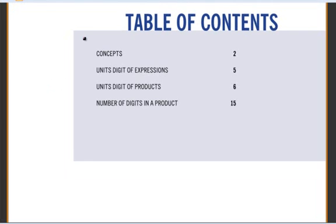In this chapter on units digits, we will learn some of the concepts associated with units digits of numbers when they are raised to a power. We will learn about the cyclicity of units digits. Then we will deal with questions where we have to find the units digit of expressions which have sums and products. We will extend the logic further to find the number of digits in a product, number of digits in a factorial, and so on.